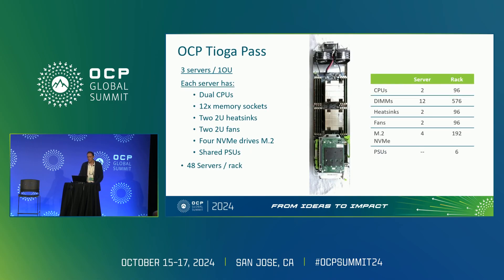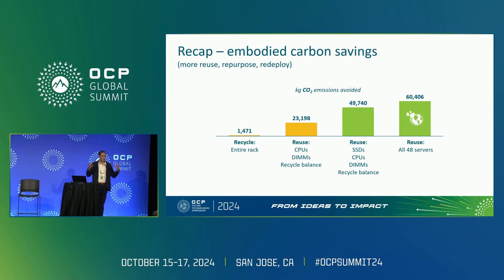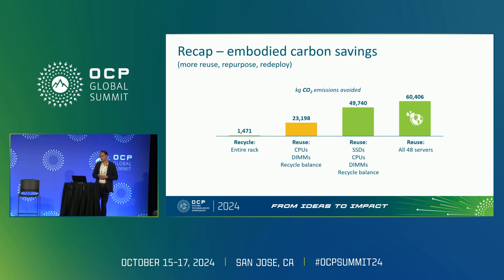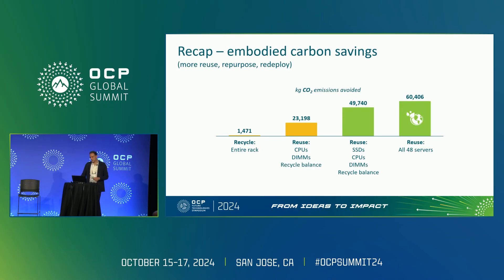Looking at an entire rack — this is a recap of a previous regional summit talk — Cisco talked about optimizing production, supply chain, and reuse. At Sims Lifecycle Services we focus heavily on second life: reuse of entire racks, reconfiguration, and selling to tier 2 and tier 3 data centers. What happens after three to five years? Reusing the entire rack with all servers in place gives the highest emissions avoided — about 60,000 kilograms. That's quite a large number.